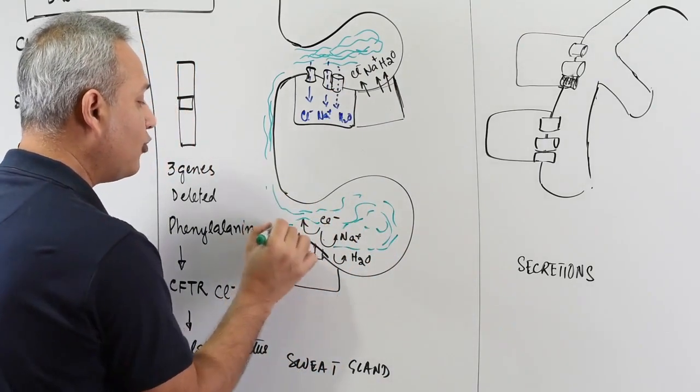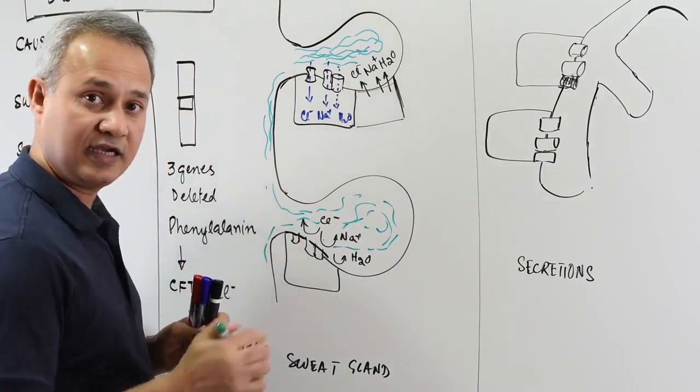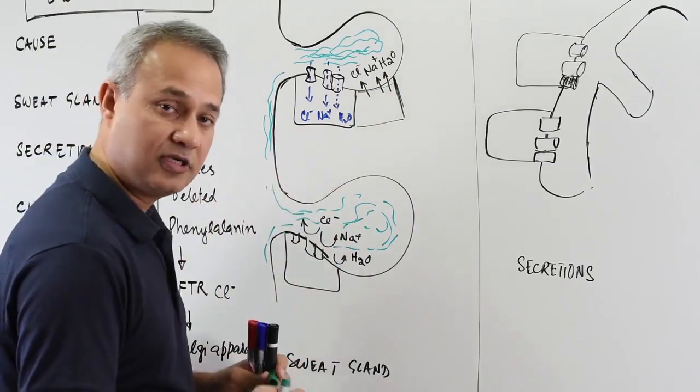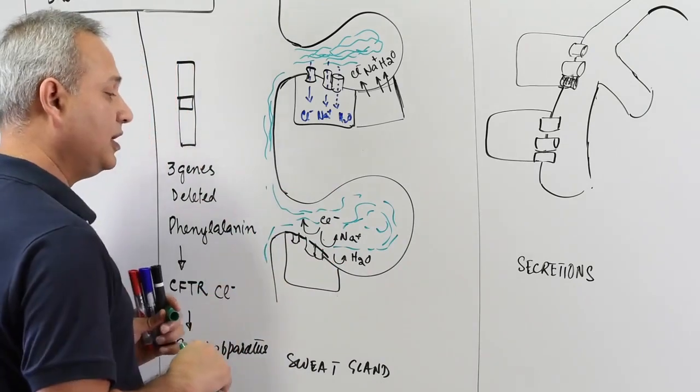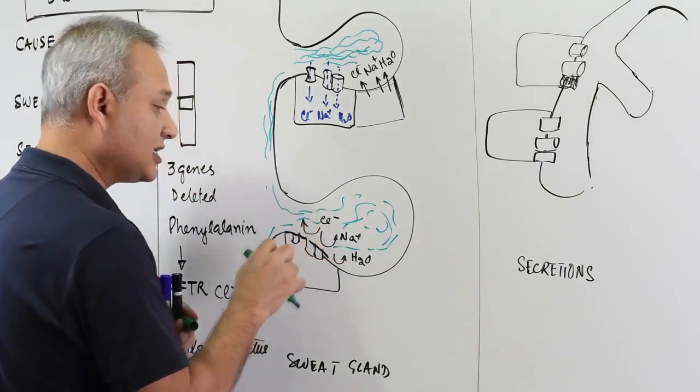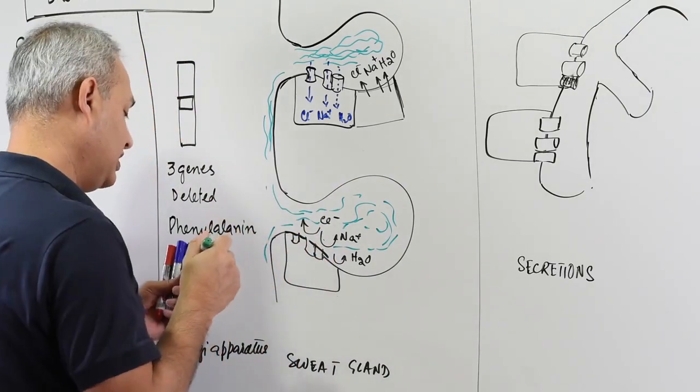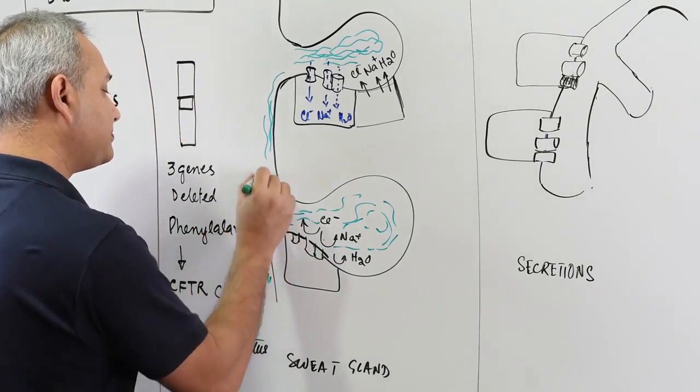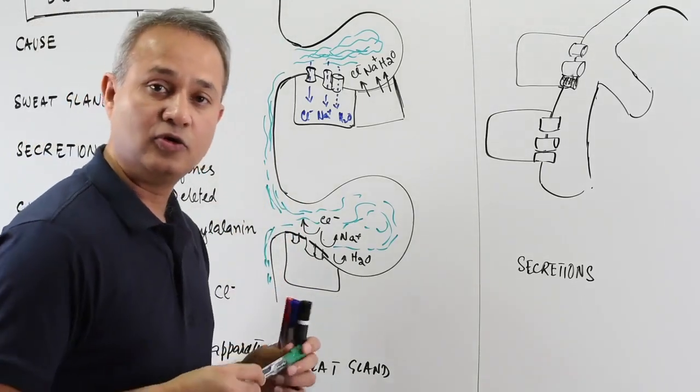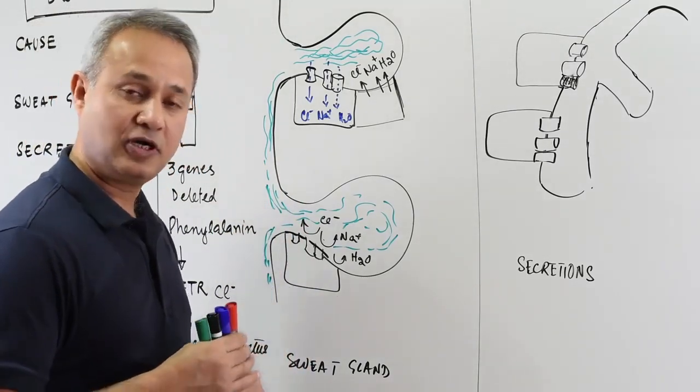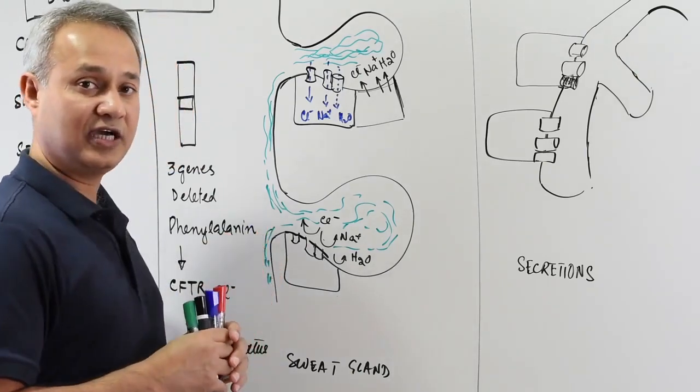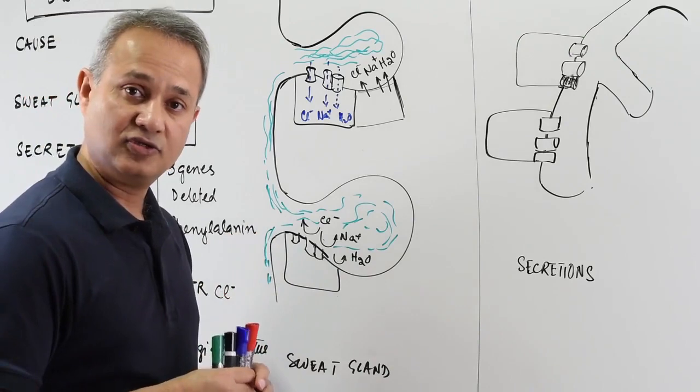What will happen is that sweat becomes hypertonic. Remember when sweat is produced it is hypertonic, then before it is secreted out on the skin it becomes hypotonic because we pull the ions out. When we have a problem here with the CFTR proteins, then those ions cannot be pulled out. So what we will end up with is hypertonic solution.